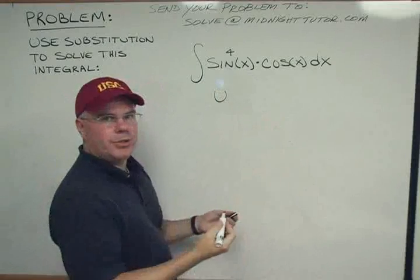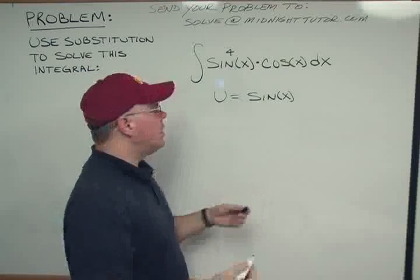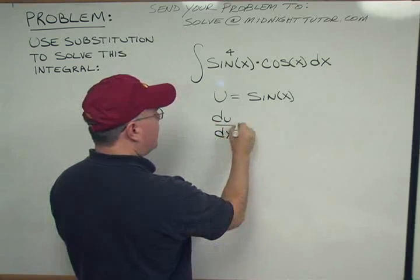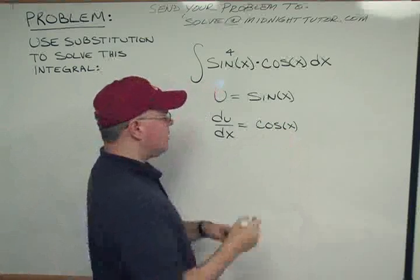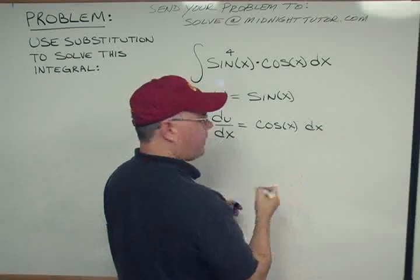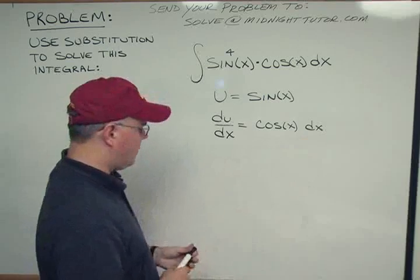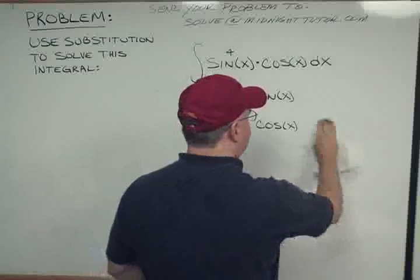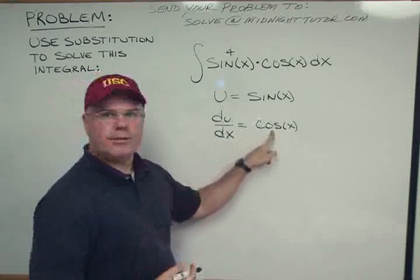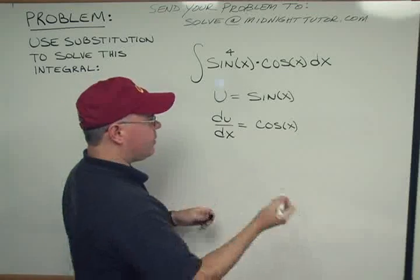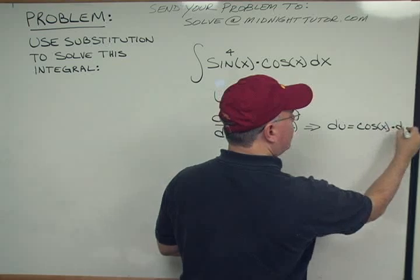Let's say that u, some new variable u, is equal to the sine of x. What would du/dx be? So du/dx is equal to — well, the derivative of sine is cosine — cosine of x times the derivative of what's inside. So it's cosine x. You just have to move the dx over, so you say du/dx is cosine x, therefore du is cosine x dx.